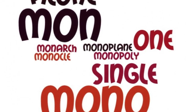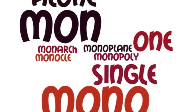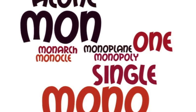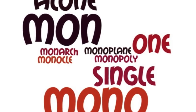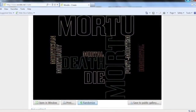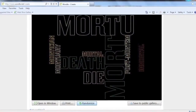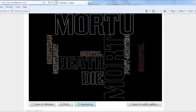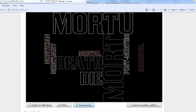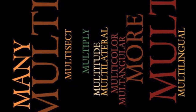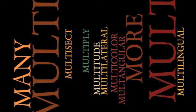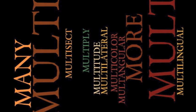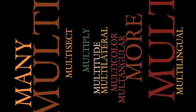Mon or mono mean alone or single, such as in monocle, monopoly, monoplane, or monarch. Mortu means to die, such as in mortuary or mortify. And multi means many, such as in multiply, multitude, multilateral, multilingual, and multi-angular.